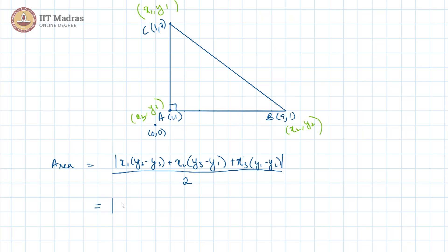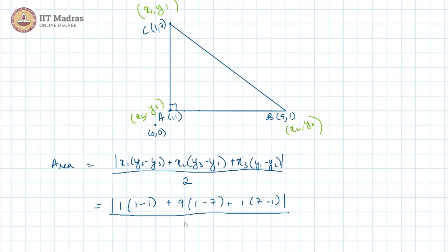Applying this formula, we get x1 is 1, y2 and y3 are both 1, so 1 into (1 minus 1) plus x2 is 9, y3 is 1, y1 is 7, plus x3 is 1, into (y1 minus y2) is (7 minus 1). This evaluates to 0, then 9 into minus 6 is minus 54, and 7 minus 1 is plus 6, all divided by 2. Taking the modulus, this is 48 by 2, which is 24 square units.